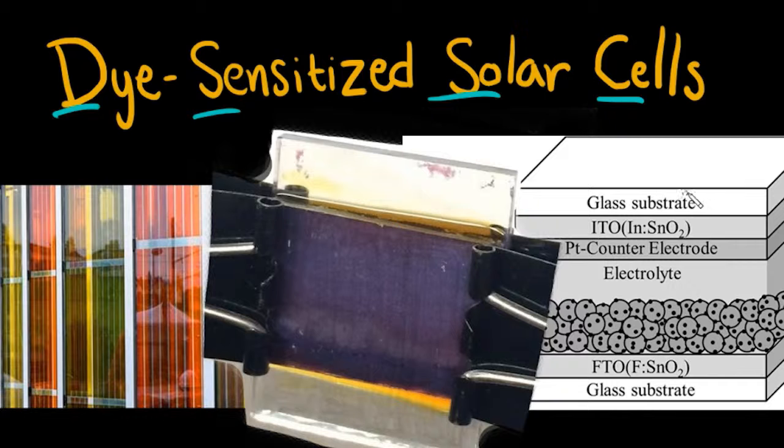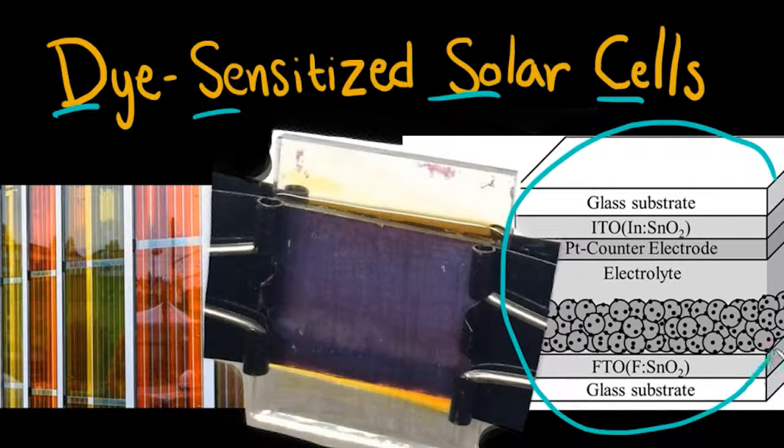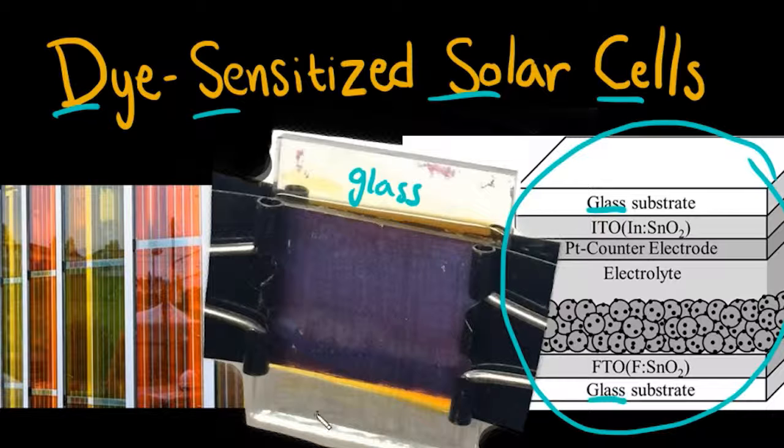And the type of DSSC we're going to talk about is this structure you see right here where you have two glass lights like this and then a bunch of functional materials in between that are sandwiched in between. So you see an image of what it can look like where you have two glass lights and in between you have all these sandwich materials.